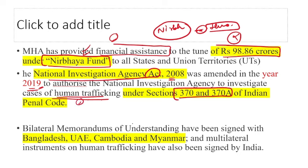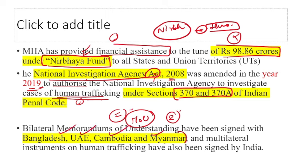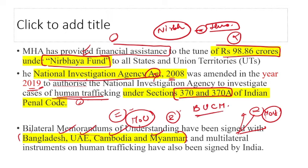India has signed bilateral Memorandums of Understanding (MOUs) to tackle human trafficking with: Bangladesh, UAE, Cambodia, and Myanmar. Multilateral MOUs also exist but the bilateral ones — Bangladesh, UAE, Cambodia, and Myanmar — are important to remember for exams.